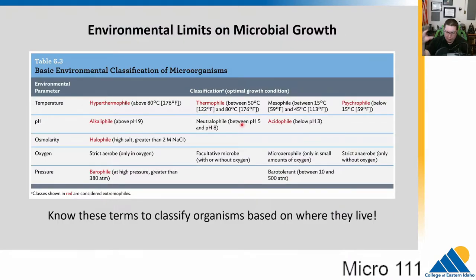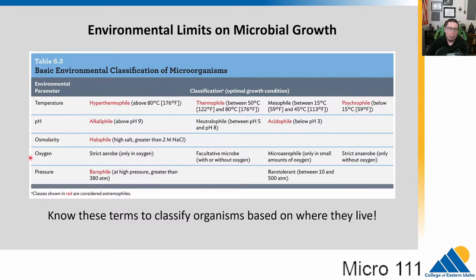Each individual organism has something it prefers, and we can classify this based on various factors: temperature, pH, osmolarity, oxygen — whether there's oxygen or not — and pressure.